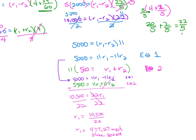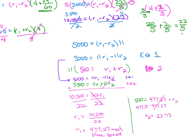Now let's find the wind speed. We plug R1 into Equation 2: 500 equals 477.27 plus R2. Subtracting 477.27 from both sides, we find that the speed of the wind is about 22.73 miles per hour.